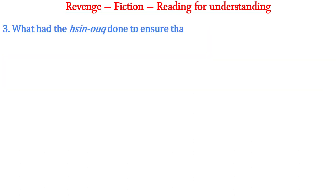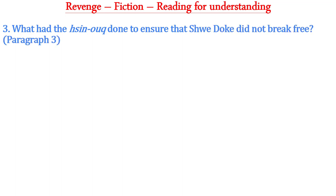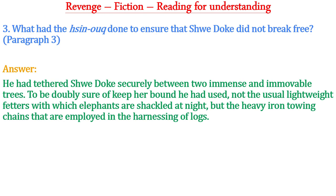Question three: What had the Shin Hawk done to ensure that Shuidok did not break free? This question is from paragraph three. The answer is: he had tethered Shuidok securely between two immense and immovable trees. To be doubly sure of keeping her bound, he had used not the usual lightweight fetters with which elephants are shackled at night, but the heavy iron towing chains that are employed in the harnessing of logs.